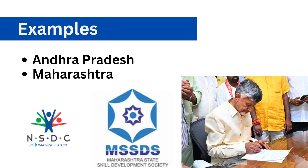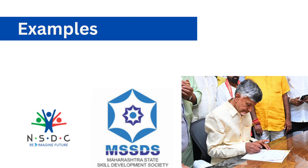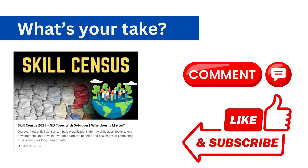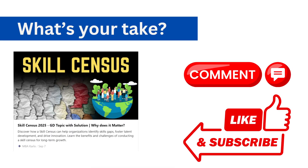Real-time examples include recent initiatives launched by Andhra Pradesh, Maharashtra, and Karnataka. If you want to read more about these initiatives, I recommend you visit the article linked in the description — 'Skill Census 2024 GD Topic with Solution' — which will help you with statistics, real-time examples, and more information about this topic.